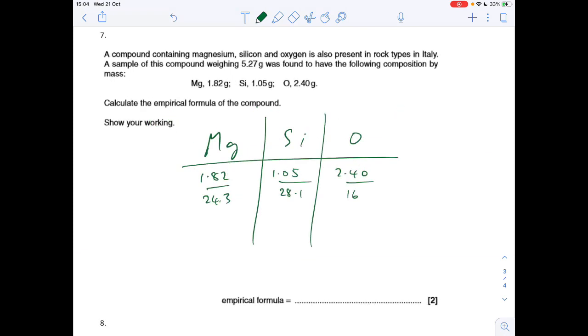Number 7 is another empirical formula question. You'll see I've already populated the masses and the relative atomic masses. So we're going to divide those and get the moles. So that gives us those moles there, divide by the smallest, which is obviously this one here. So it's a 2-1-4 ratio. They're whole numbers, so we don't need to multiply out. So it's Mg2SiO4.